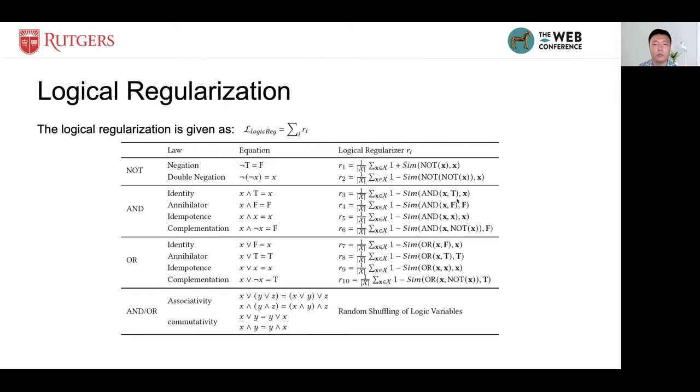As noted before, T here is the constant vector representing the true. And F here is representing the false, which is obtained through NOT T.